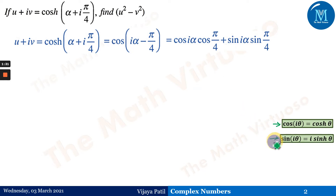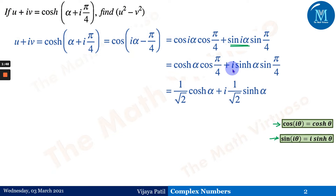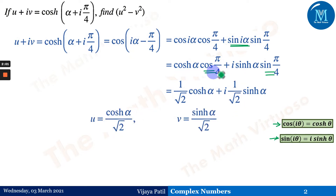Again, using the relationship between circular and hyperbolic functions — sin(iθ) = i·sinh(θ) — we apply this: i·sin(iα) gives i·sinh(α). The remaining terms stay, and cos(π/4) and sin(π/4) both equal 1/√2, so we substitute those values.